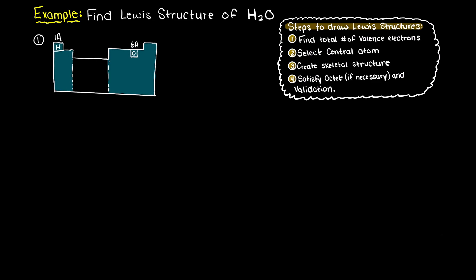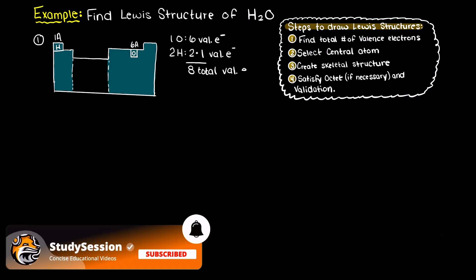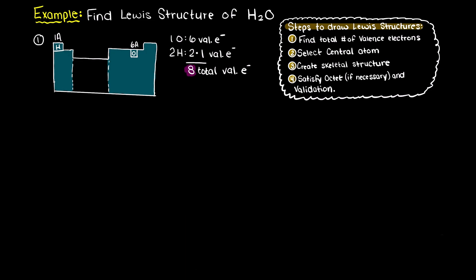Therefore, oxygen being in group 6a will have 6 valence electrons, and hydrogen in group 1a will have a single valence electron. Therefore, our total compound will have 8 valence electrons.